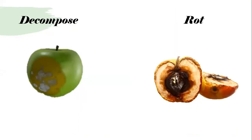First, we are going to learn two important words that you need to know. The first word is decompose — decompose means to decay or rot. The next word is rot — rot means to decay by the action of fungi.